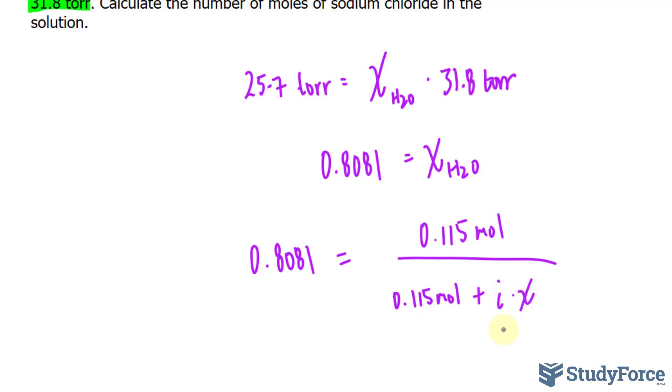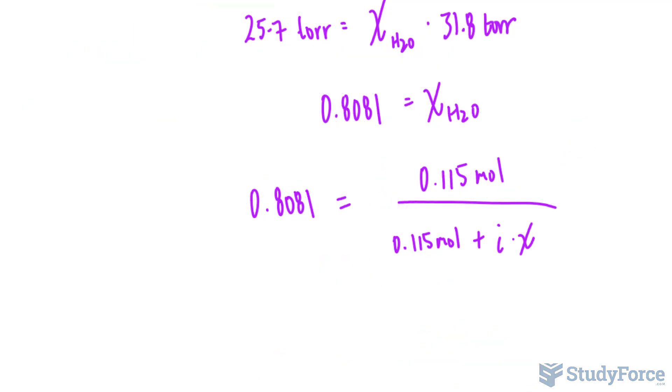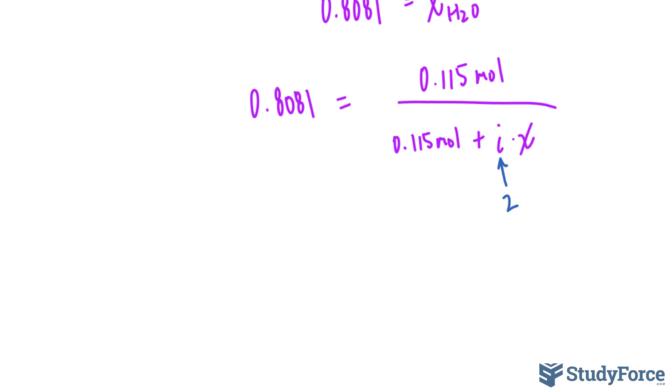X will represent the number of moles of our ionic molecule, sodium chloride. Sodium chloride completely dissociates. And if we look at its dissociation equation, we have sodium chloride and it forms sodium cations and chloride anions. This means that the van't Hoff factor here has to be two, because we have two ions that it breaks down into. That's good news for us, because now we can substitute two into there and all we have really is an algebraic problem.